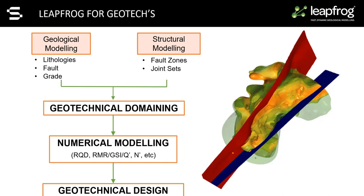LeapFrog for geotechs. Today we'll be covering some of the basic functionality in LeapFrog used to create a geotechnical model and we'll go through a workflow for creating a geotech model in LeapFrog. The fundamental idea of making a geotech model is similar to that of creating a geological model, and that is getting your domaining correct. Today's workflow will look something like this: firstly, we'll use existing structural and geological models as the starting point for domaining. Then we will look at using some cool statistical tools to see if these domains require further subdomaining. We will then look at creating a numeric model within these domains to estimate RQD, and finally we will look at some outputs that could be used for geotechnical design.